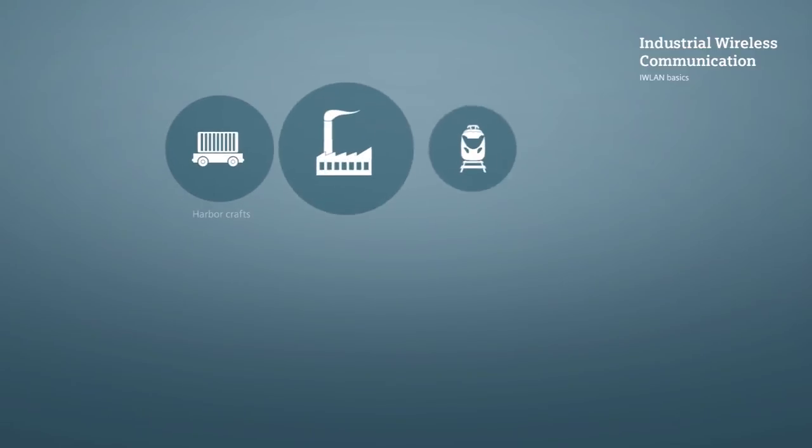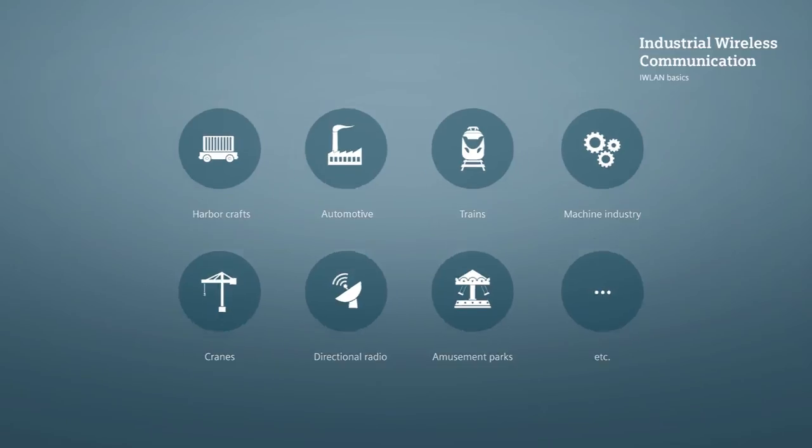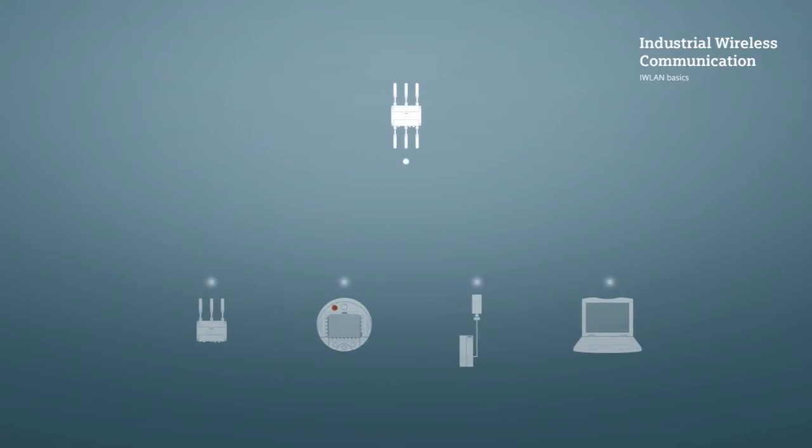In industrial plants, Industrial Wireless LAN has over the last few years proven to be successful a thousand times over. Industrial Wireless LAN also relies on an architecture made up of access point and client, just as in the case of the normal local wireless LAN.